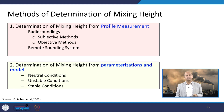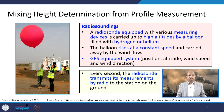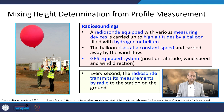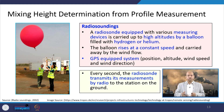For radio sounding, balloons with sensor-based instruments are used. As the balloon rises, readings are taken at different heights. A GPS-equipped system gives position, altitude, wind speed, and wind direction, all collected at the ground station. Every second, the radiosonde transmits measurements by radio to the ground station. However, the balloon drifts with wind direction, so we cannot control which vertical column is measured.